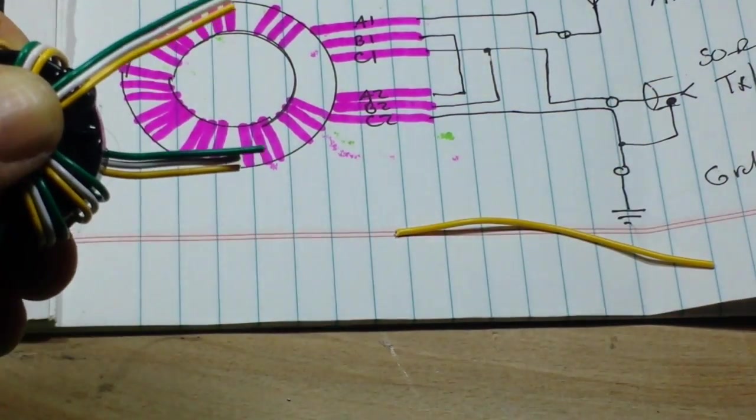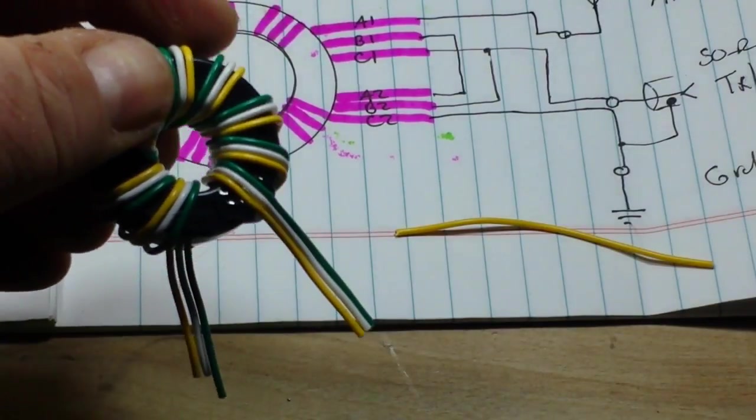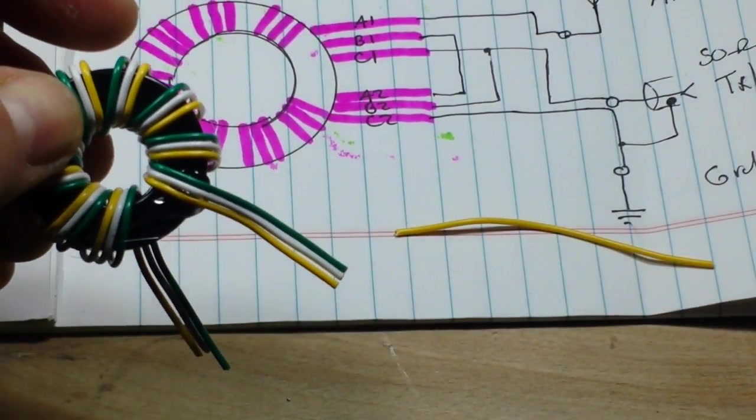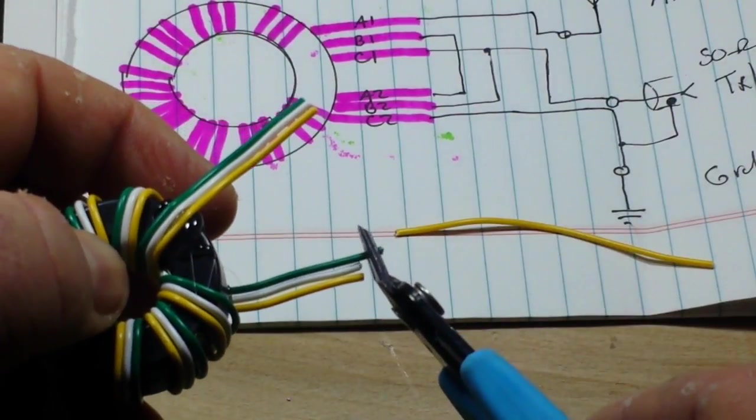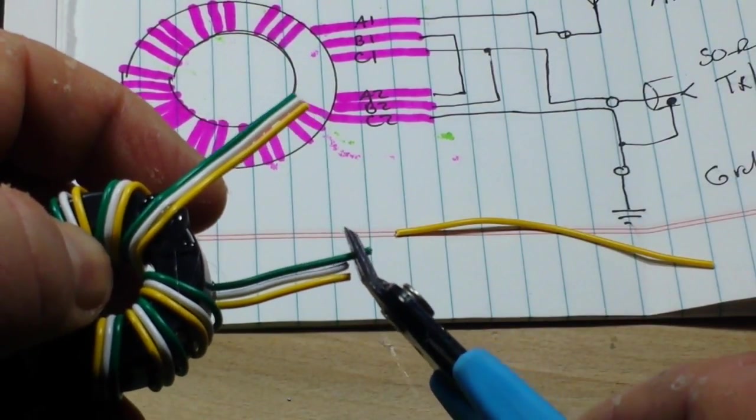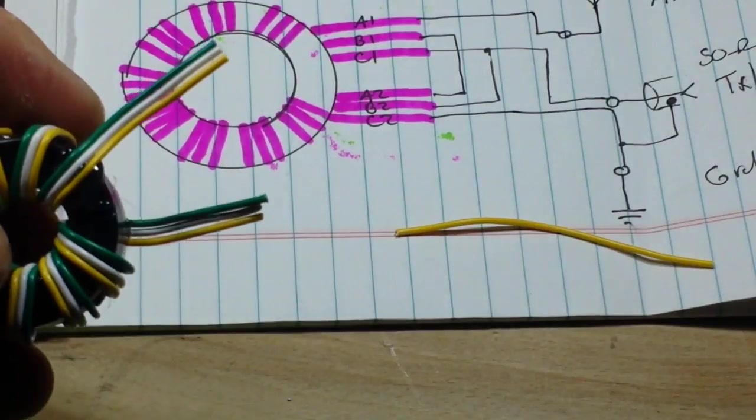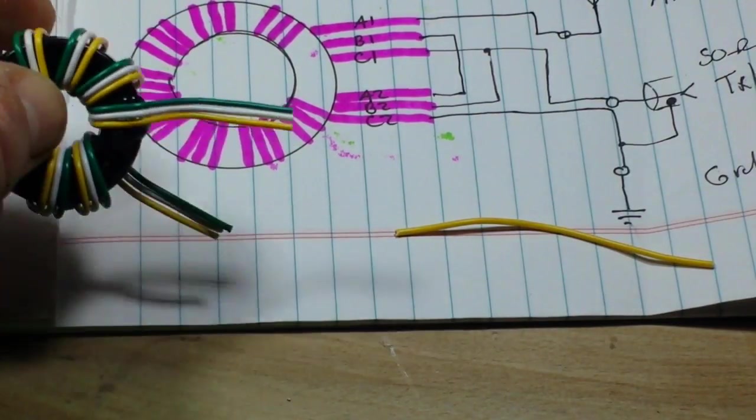All right, so we're all nice and wound. Just going to cut this off here. And there's our 9:1. Now we just have a few connections to make, so I'm going to warm up the soldering iron and we'll get that ready to go.